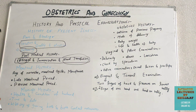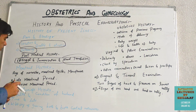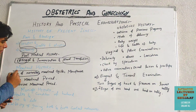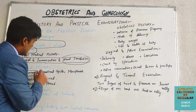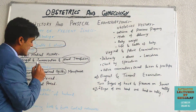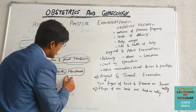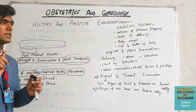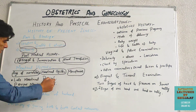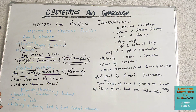In menstrual history, we ask the patient about the age of menarche, which is the start of the menstrual cycle, then about the menstrual cycle itself and menopause — the stoppage of the menstrual cycle — as well as the last menstrual period and the previous menstrual period.